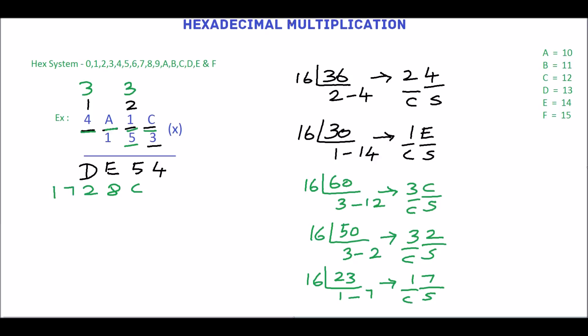Then multiply 1 by 4A1C. 1 into C is C. 1 into 1 is 1. 1 into A is A. 1 into 4 is 4.